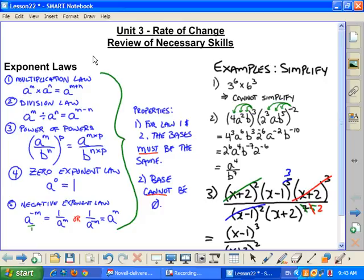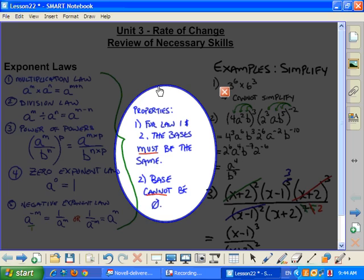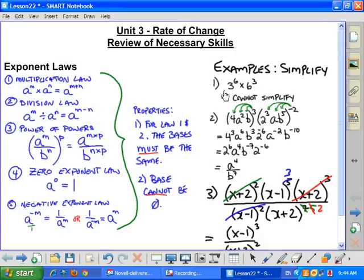We have our Multiplication Law, Division Law, Power of Power Law, Zero Exponent Law, and Negative Exponent Law. Key properties for those Exponent Laws are listed right here. For Law 1 and 2, you must have the same bases, and for our Exponent Laws, base cannot be zero. I have a couple of examples over here.